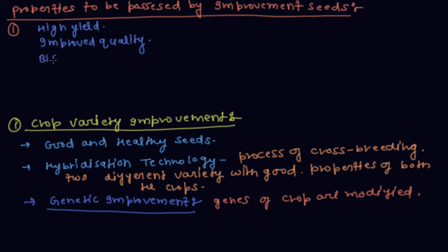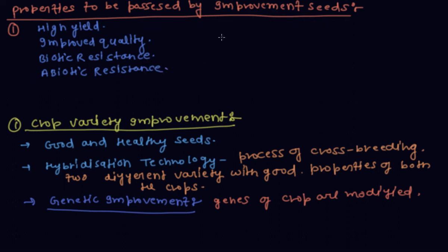The third property is biotic resistance, meaning resistance to disease caused by living microorganisms and insects. The fourth is abiotic resistance, meaning resistance to problems from non-living things like drought, heat, cold, frost, water loss, fogging, and salinity.